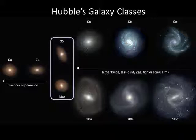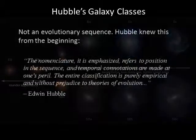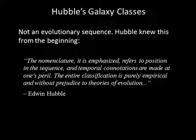Lenticular galaxies are designated S0. Astronomers had once thought the Hubble sequence was an evolutionary sequence in which galaxies flattened and spread out as they aged, but we now know that this is not the case. The evolution of galaxies is much more complex — Edwin Hubble knew this from the beginning.